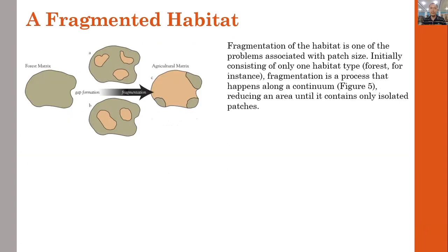Habitat fragmentation is one of the major problems affecting species. The patch sites initially consist of only one habitat type, and fragmentation is a process that happens along a continuum. You can see the forest matrix and gap formation — this is fragmentation. It resolves into what we call the agricultural matrix, creating isolated patches with gap formation among them.